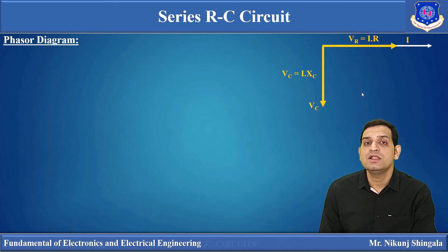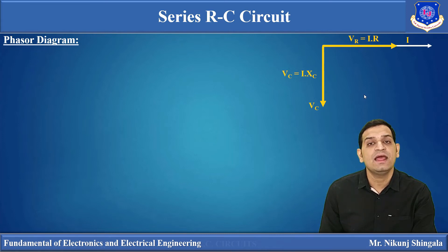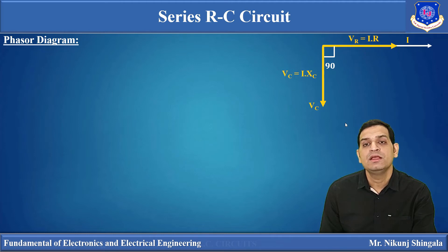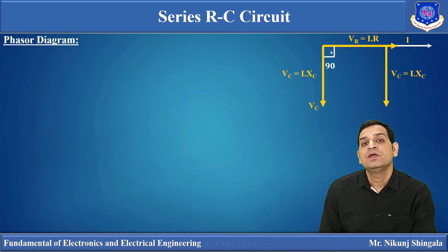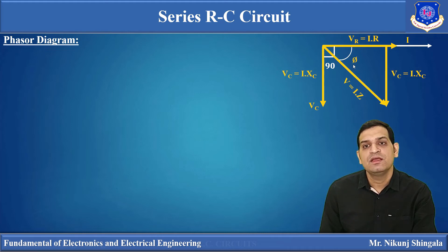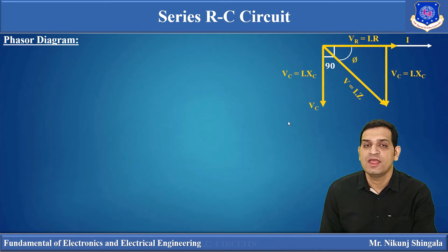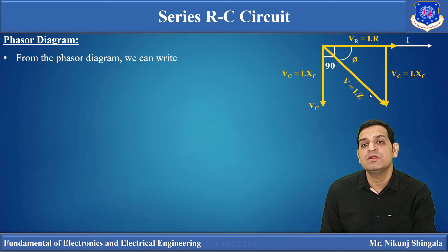We now need to find the resultant supply voltage V, which is the phasor sum of VR and VC. The phase difference between I and VC is 90°. Taking the projection of VC and finding the resultant, the resultant voltage V is in a direction making some angle phi (φ) with the current. The phase angle between the applied voltage and the resulting current is denoted by φ, and V = I×Z.